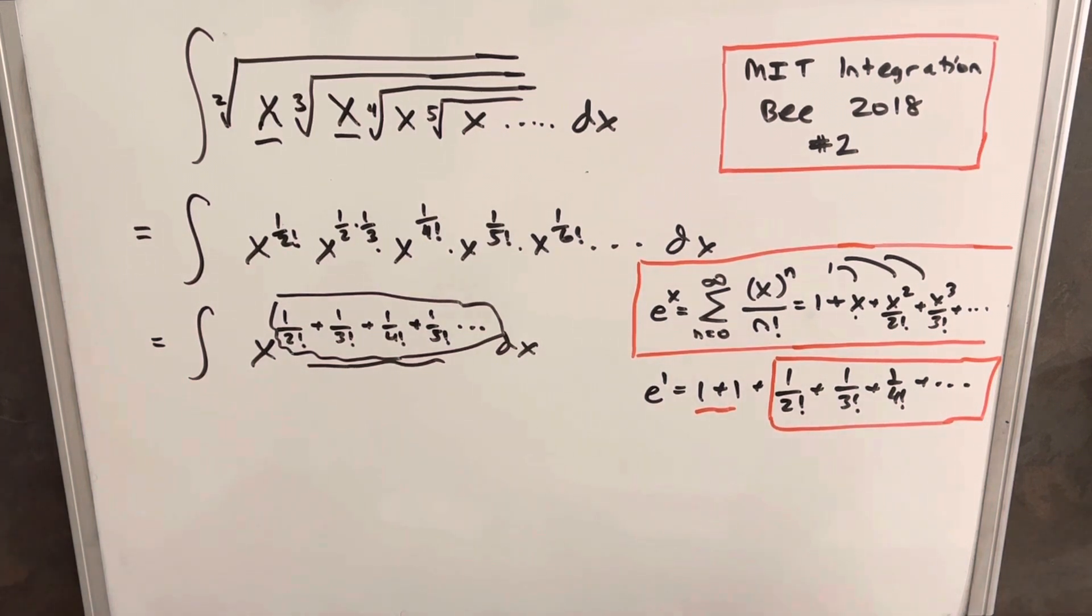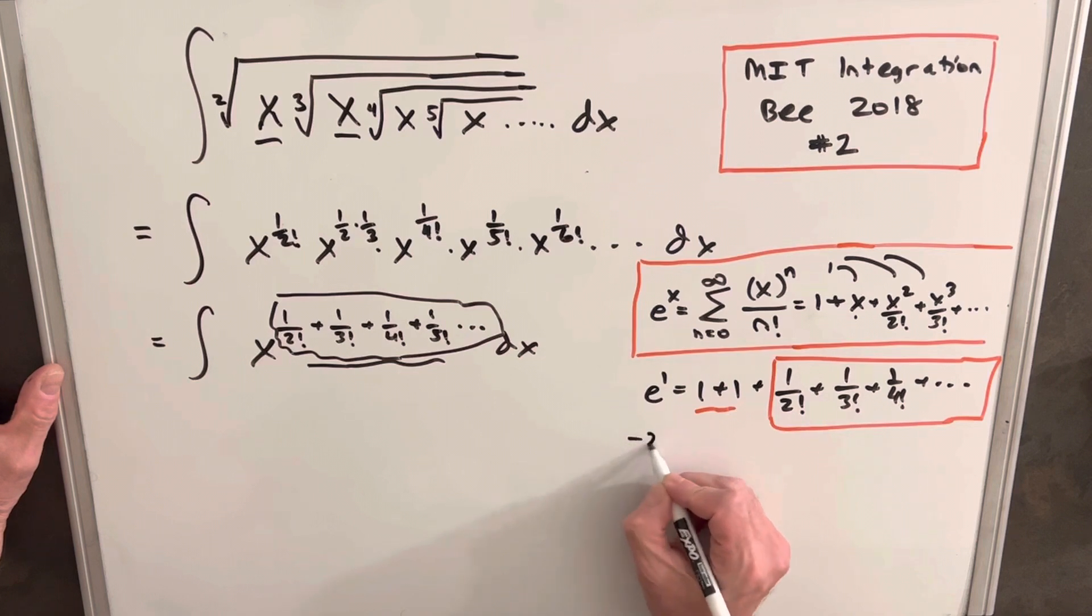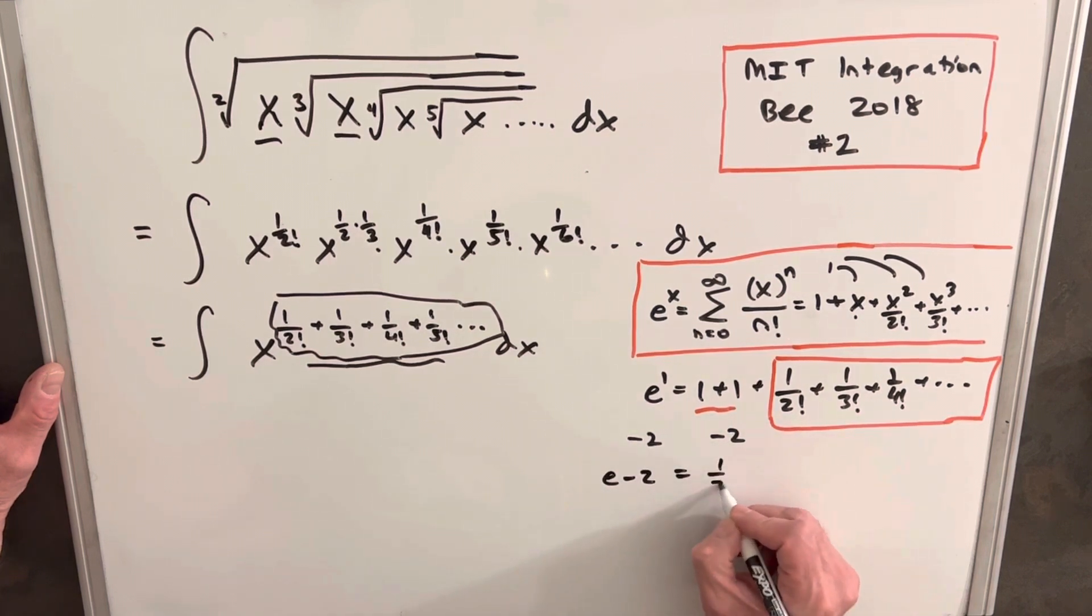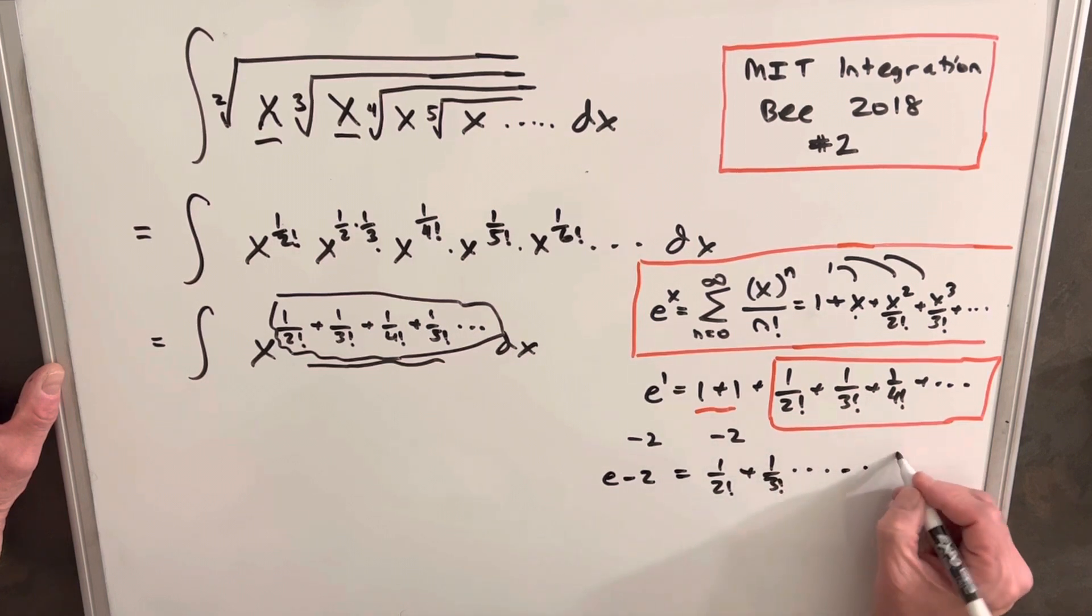But then it's really easy to achieve an expression for that because we can just subtract a 2 on both sides. Okay, so if we subtract, so over here on the left we're going to have e minus 2, and on the right we're going to have just 1 over 2 factorial, 1 over 3 factorial, etc.